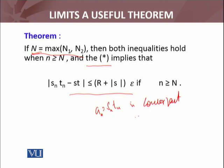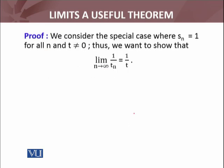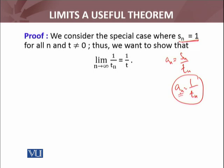We have proved that Sn·Tn converges to S·T. Now let's go to the other statement. I will consider Sn/Tn and its particular case where Sn equals 1 for all n, so An becomes 1/Tn. I will prove the convergence of 1/Tn first, and then by using the product result already proved, I can multiply Sn and 1/Tn to obtain Sn/Tn. We want to show that limit of 1/Tn equals 1/T, where T is not equal to zero.